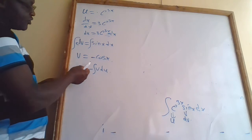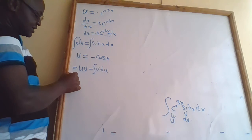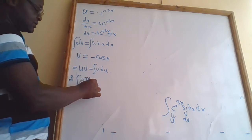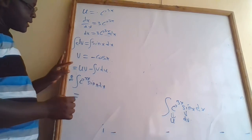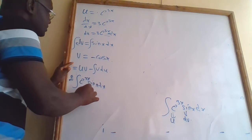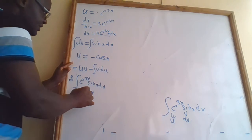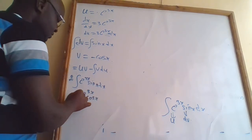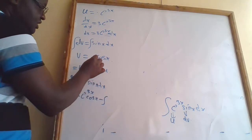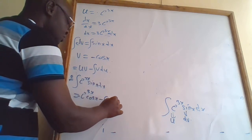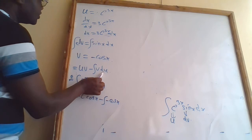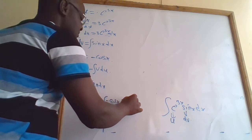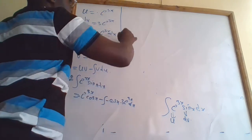We have all the values: du, u, and v. Therefore, the integral of e^(3x)·sin(x) dx equals our u times v: e^(3x) · (−cos x), minus the integral of v·du. Our v is −cos(x), and our du is 3e^(3x) dx.